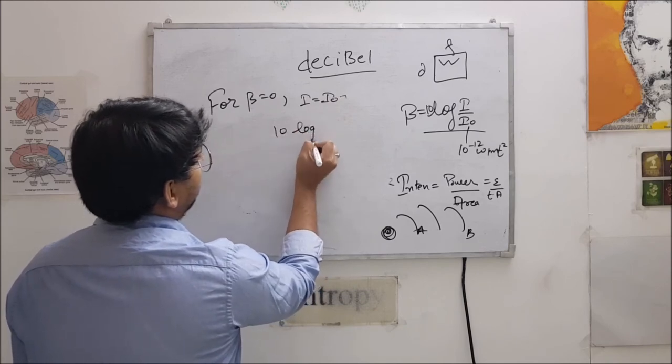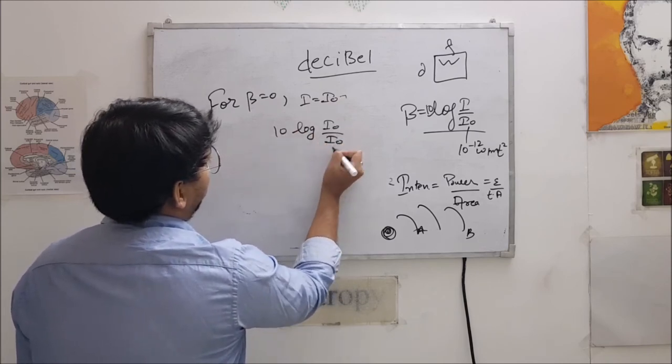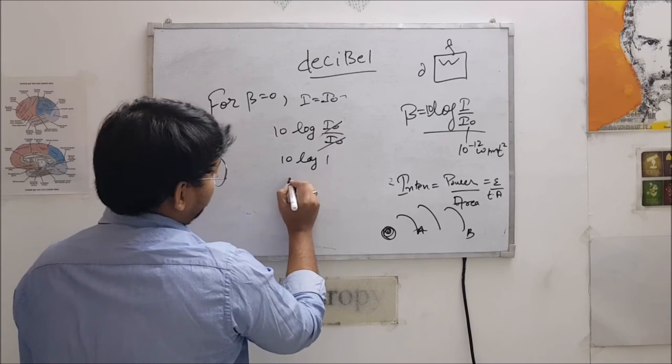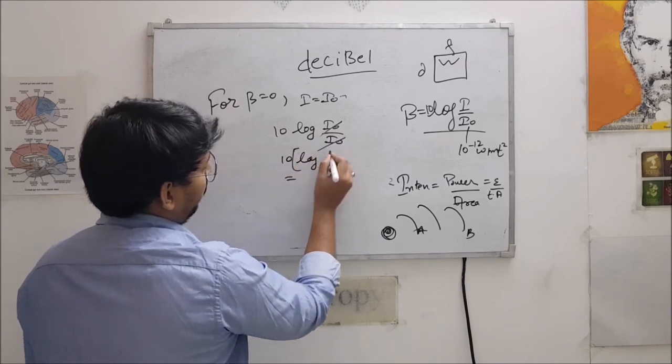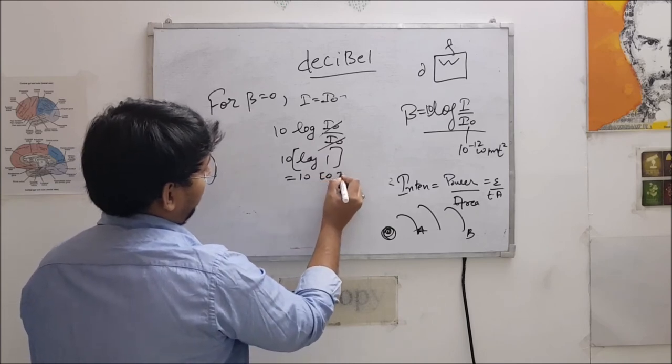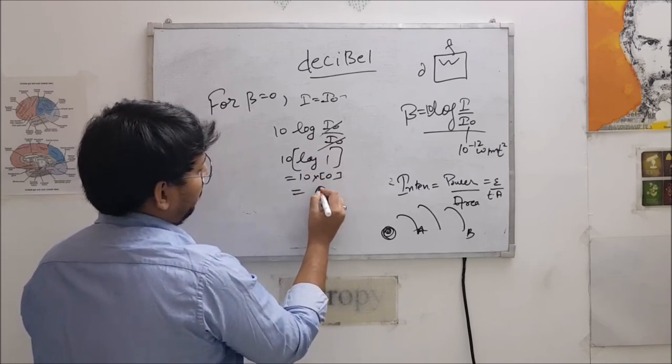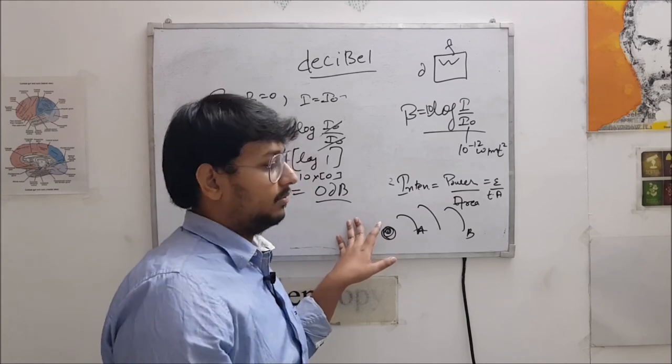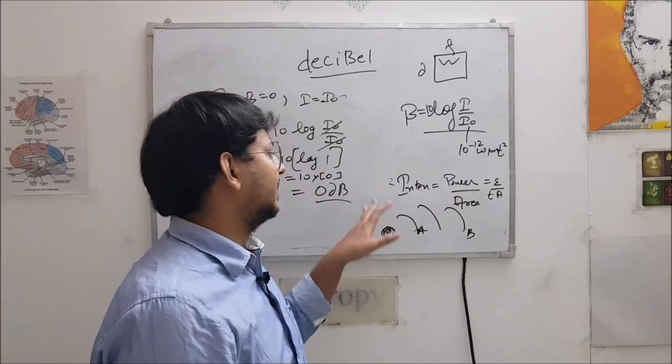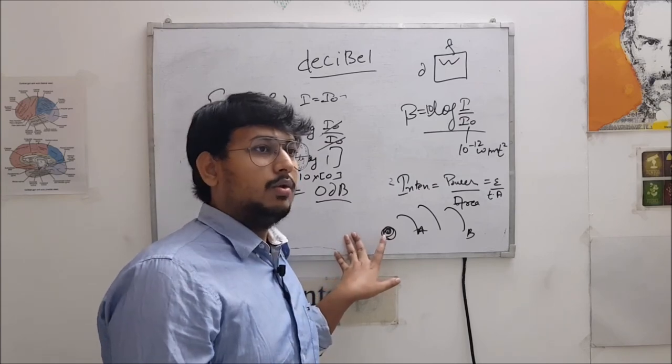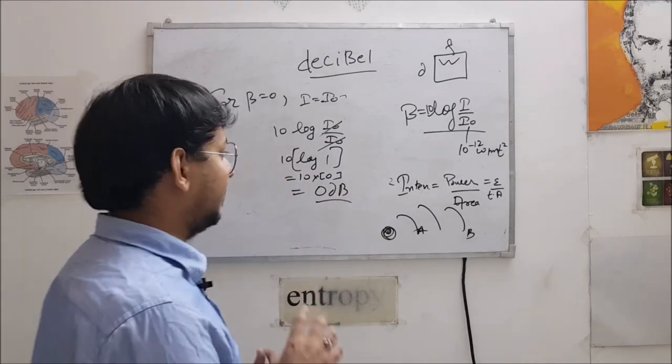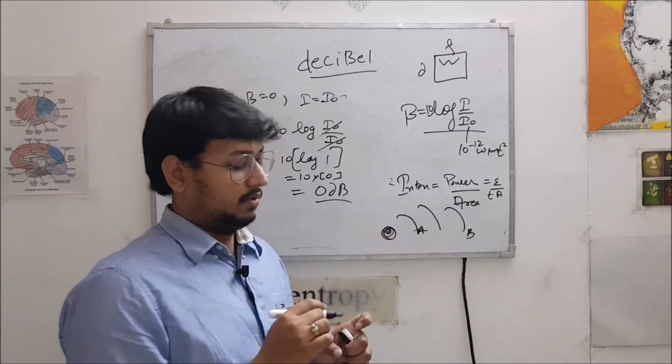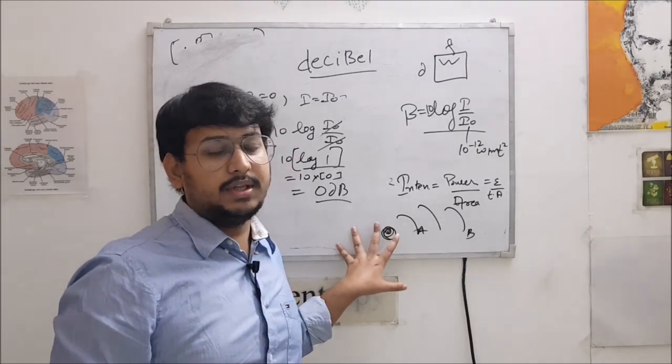10 log I0 by I0. So 10 log 1. So it will be, log 1 is what? Yeah, it is 0, so 0 decibel. Likewise, if a person is hearing 10 to the power minus 12 sound or some sound is having this much intensity measured by any instrument, so this will come out to be 0 decibel. Likewise, this can be negative also, this can be 0 also. I hope that this made your concept clear about decibel. Thank you for viewing this video, goodbye.